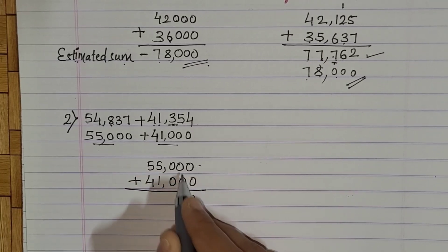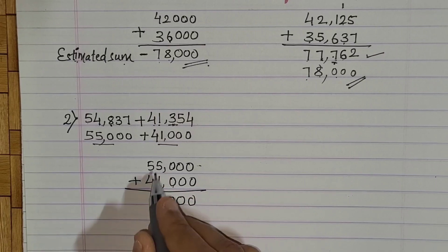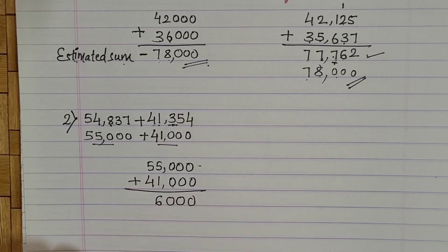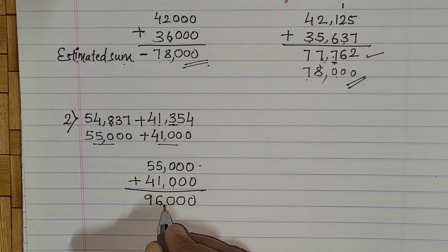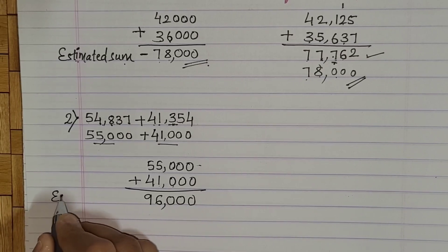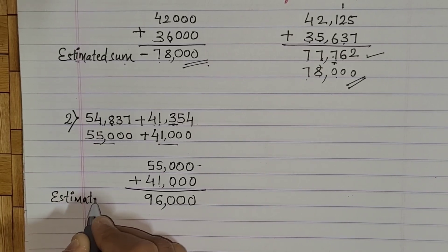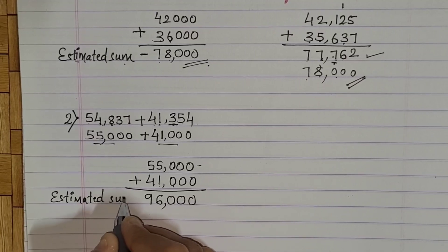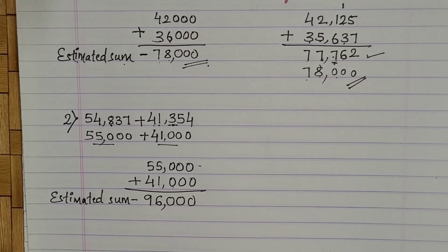Adding 55,000 plus 41,000: 0 plus 0 is 0 three times, then 5 plus 1 is 6, and 5 plus 4 is 9. So our estimated sum is 96,000.